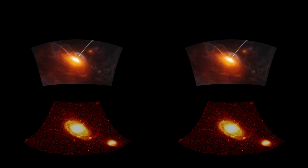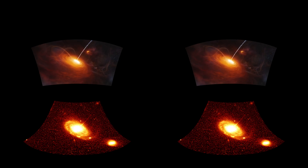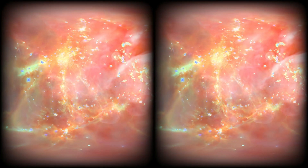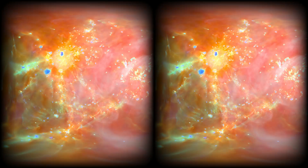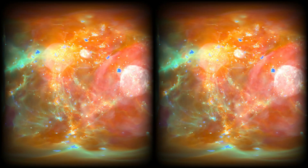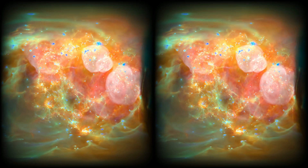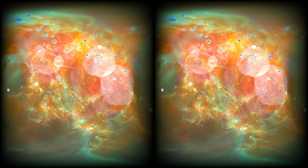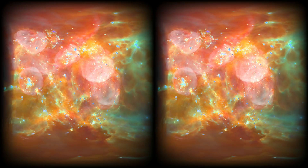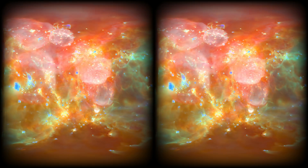Quasars, or extremely active black holes, are the brightest objects in the universe, emitting more electromagnetic radiation than entire galaxies combined. When a quasar lights up, its rapid increase in radiation blasts into space, ionising the intergalactic gas as it expands out, heating it up to extreme temperatures. This is known as quasar mode, or active galactic nuclei feedback.